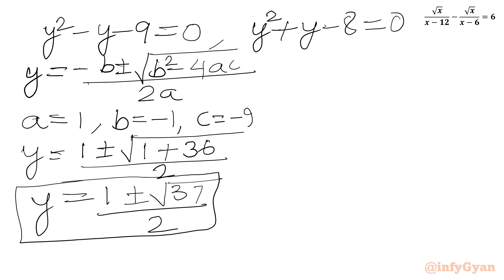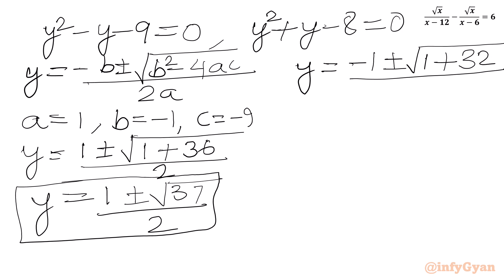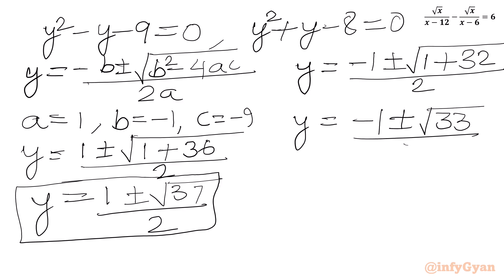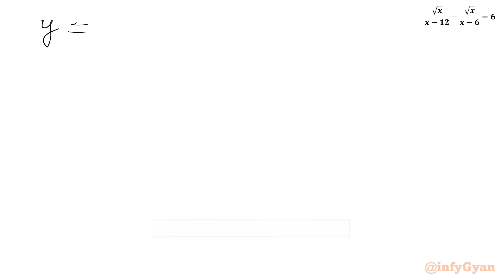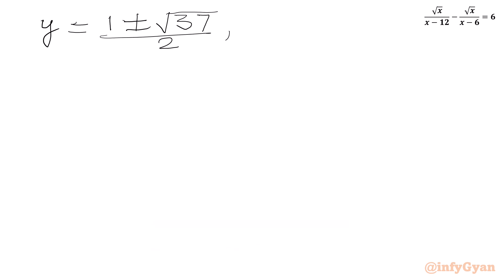Now for the second quadratic equation, I will apply the quadratic formula again. With a equal to 1, b equal to 1, c equal to negative 8, we get y equal to (negative 1 plus or minus square root of (1 plus 32)) over 2, giving y equal to (negative 1 plus or minus square root 33) over 2. Again we have two real solutions.